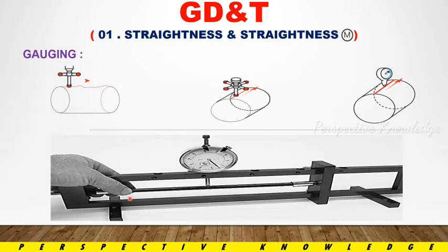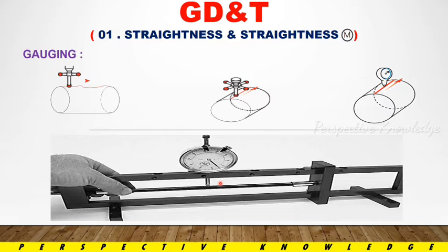If there is a 20mm rod that is not straight, we fix it in the machine with the dial gauge fixed to it. We move it forward, backward, left, and right. If it is straight or bent, we can identify it easily with the dial gauge. We can calculate the straightness value — whether it is positive or negative — and identify and rectify accordingly.